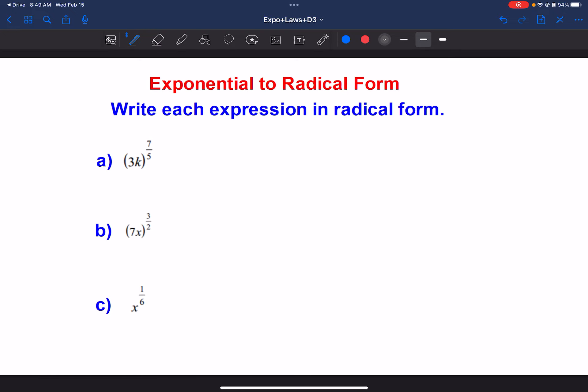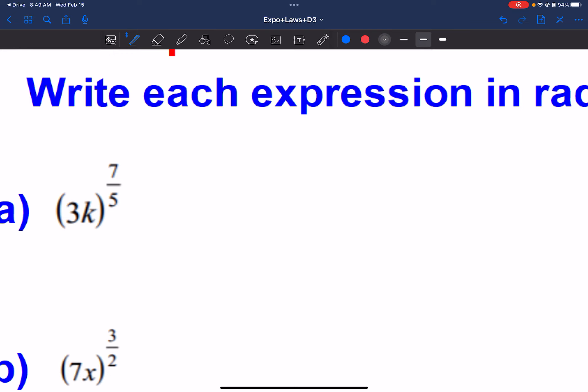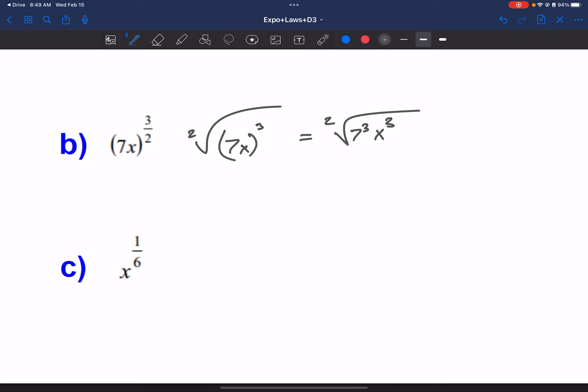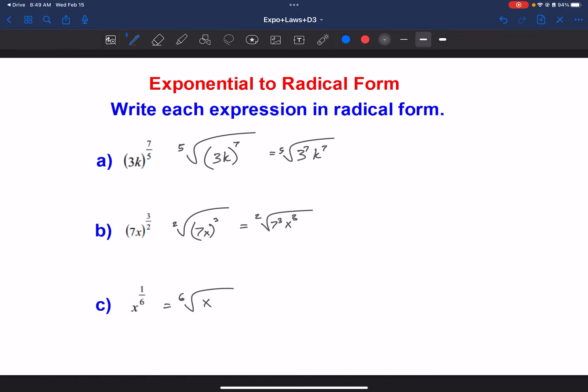Now, even with variables, it doesn't really change all that much. All this would be is the 3k would still be to the 7th power, but it'd be under a 5th root. We could even separate it out. We could say 3 to the 7th and k to the 7th under the 5th root. Same idea here. This would just be 7x cubed under a square root. We could put the 2 if we wanted to. Or square root of 7 cubed x cubed. And the last one would just be 6th root of x. And that's really it.